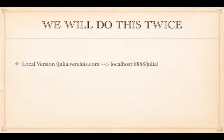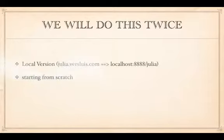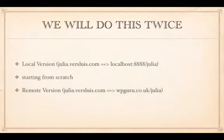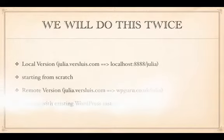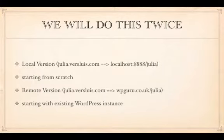In version one, I'll restore Julia's website from julia.verslewis.com to my local system using MAMP, so the site will live at localhost:8888/julia. I'll start from scratch — empty directory, empty database, no database user. In version two, I'll restore Julia's website to a different remote host at wpguru.co.uk/julia, starting with an existing WordPress instance created by a one-click installer.